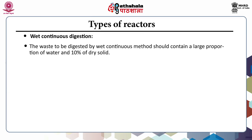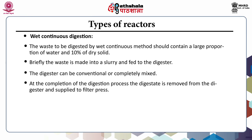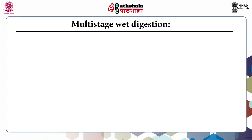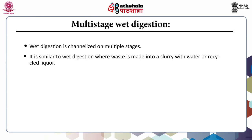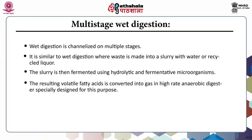Wet continuous digestion requires waste containing a large amount of water and less solid — almost 10%. The waste is made into a slurry and fed to the digester, which can be conventional or completely mixed. At completion, digestate is removed and supplied to a filter press for dewatering; the water from dewatering can be recirculated back to the digester. Multi-stage wet digestion channels wet digestion into a number of stages; the slurry is fermented using hydrolytic and fermentative microorganisms, and the resulting volatile fatty acids are converted into gas in a high-rate anaerobic digester specially designed for this purpose.